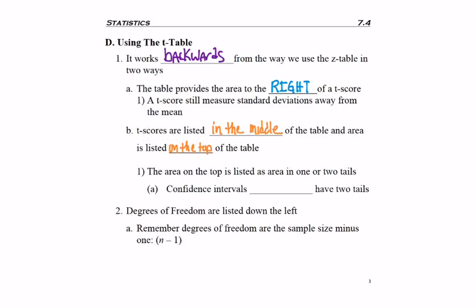And when that area is listed on the top, it specifically can be listed as area in one tail or two tails. So if we just had area below a certain score, then we just have area in the left tail, which is one tail.